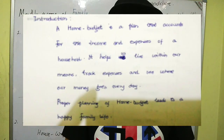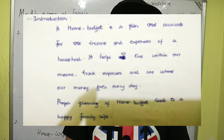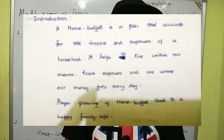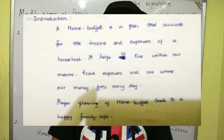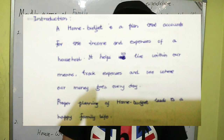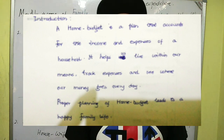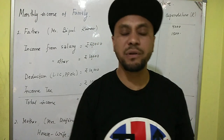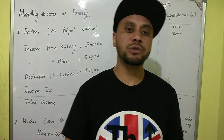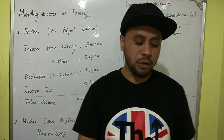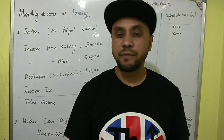Here is a sample introduction: A home budget is a plan that accounts for the income and expenses of a household. It helps us live within our means, track expenses, and see where our money goes every day. Proper planning of a home budget leads to a happy family life and a better future.